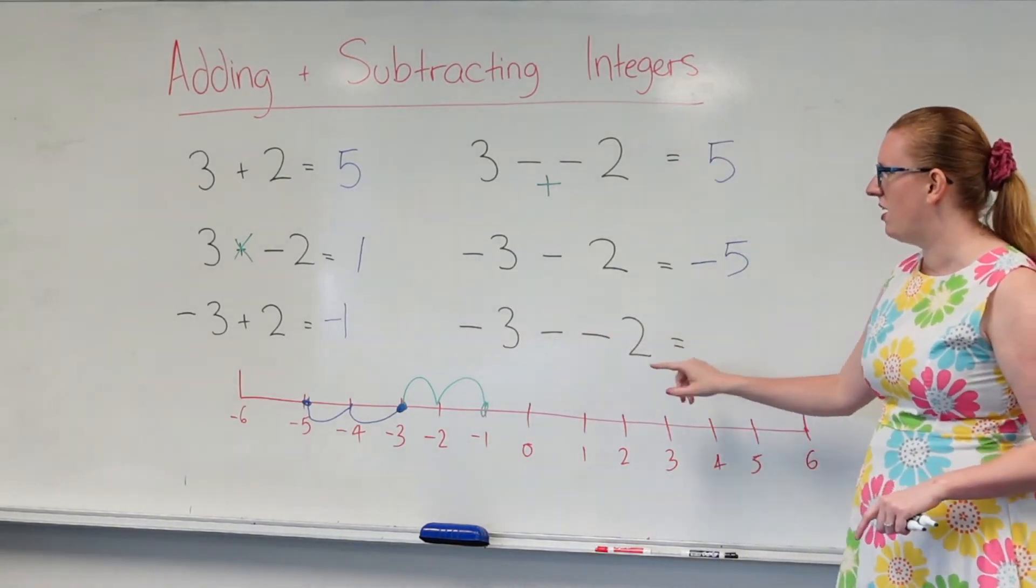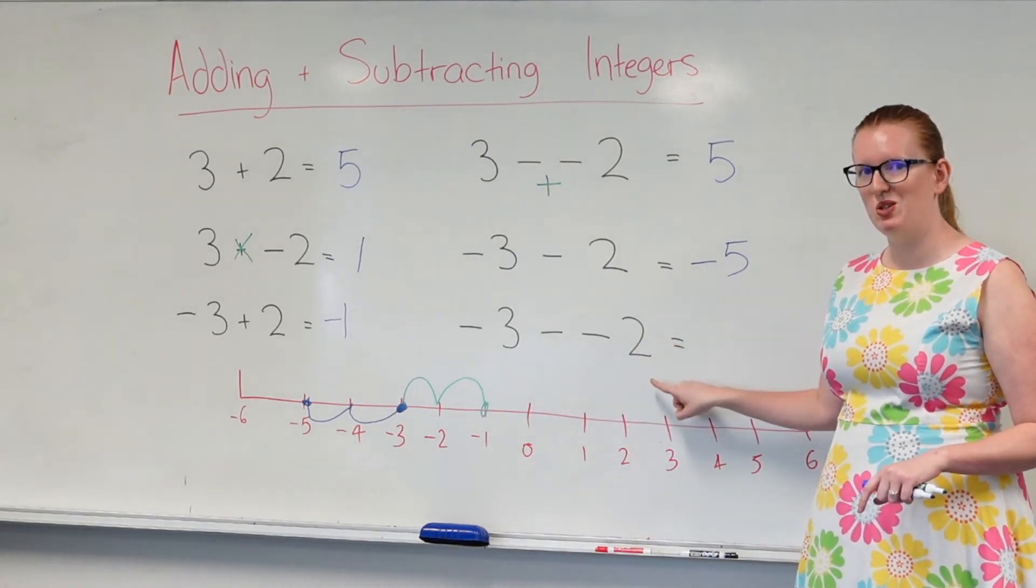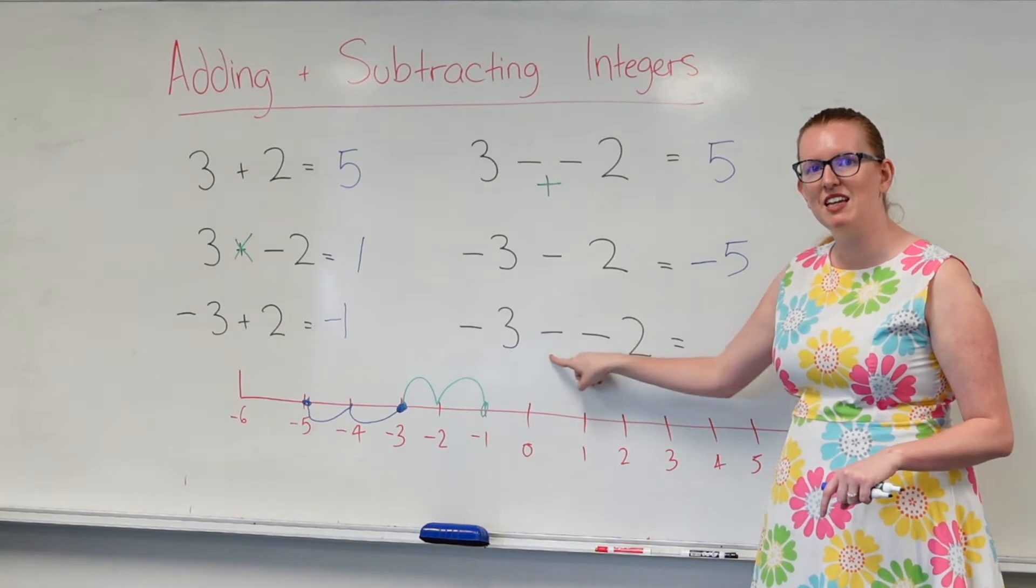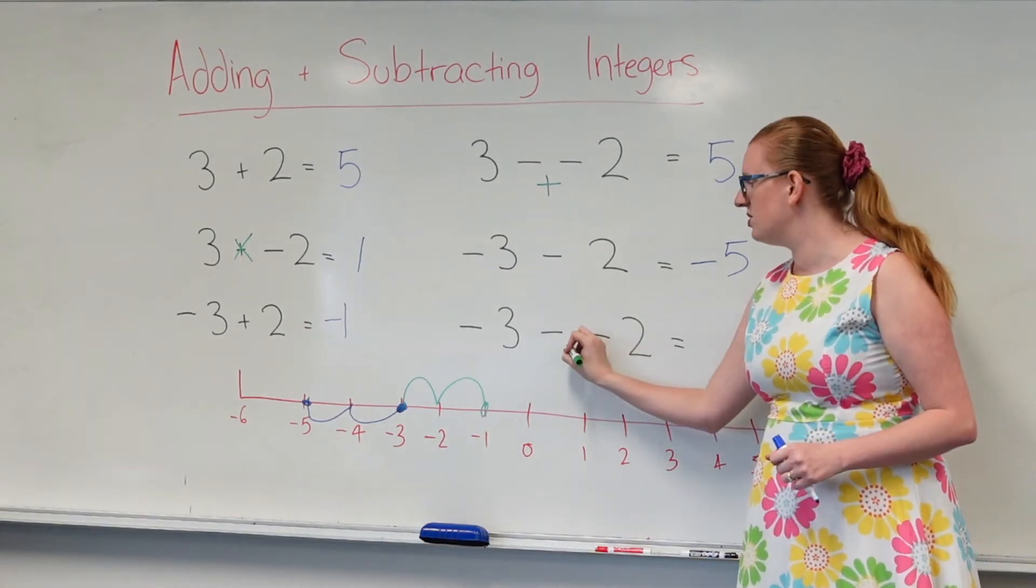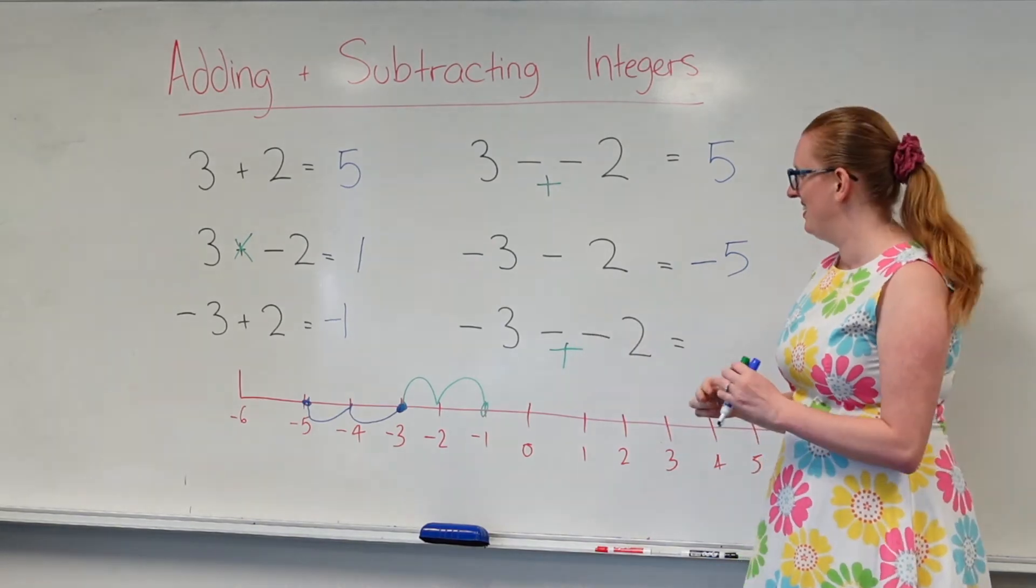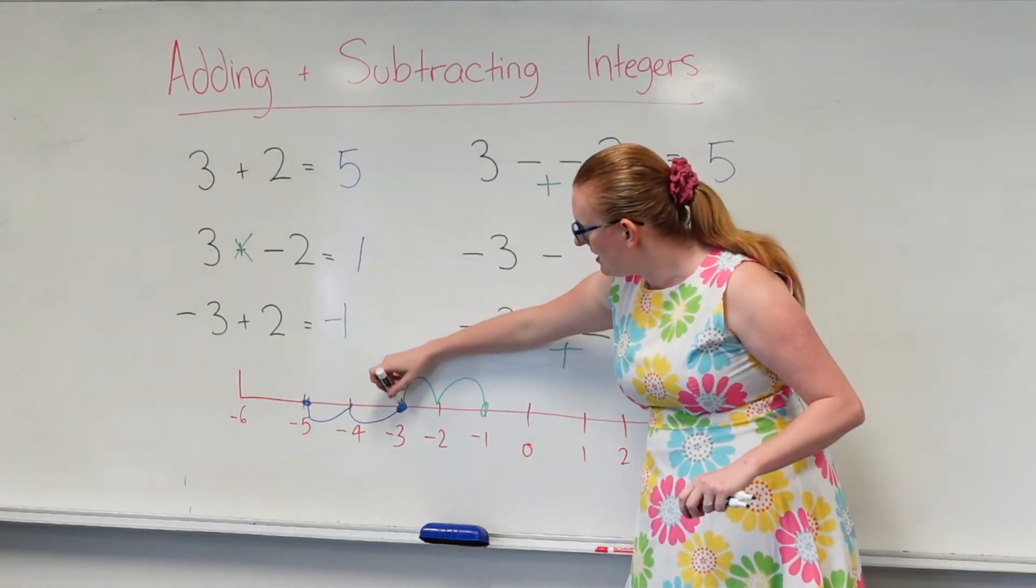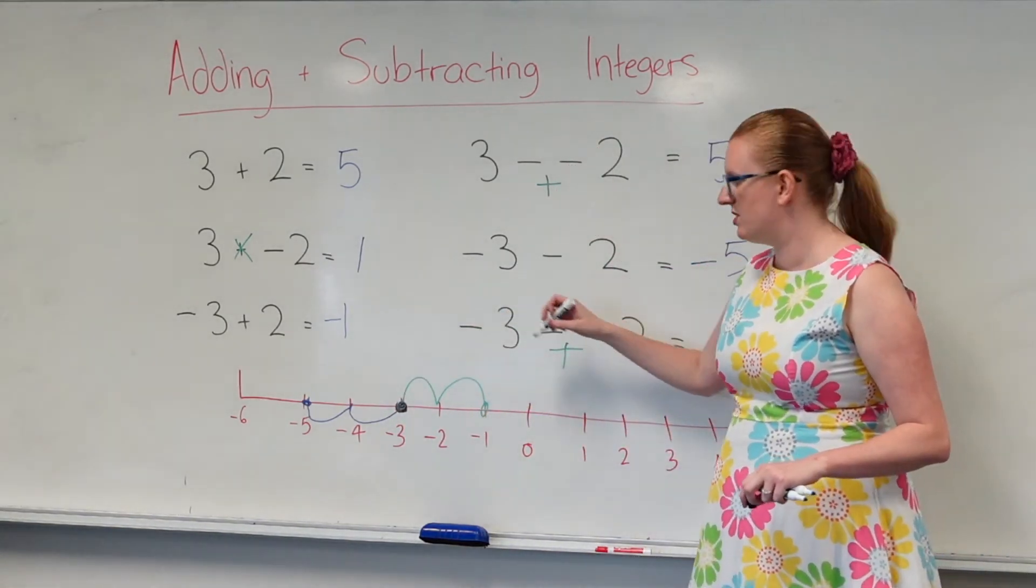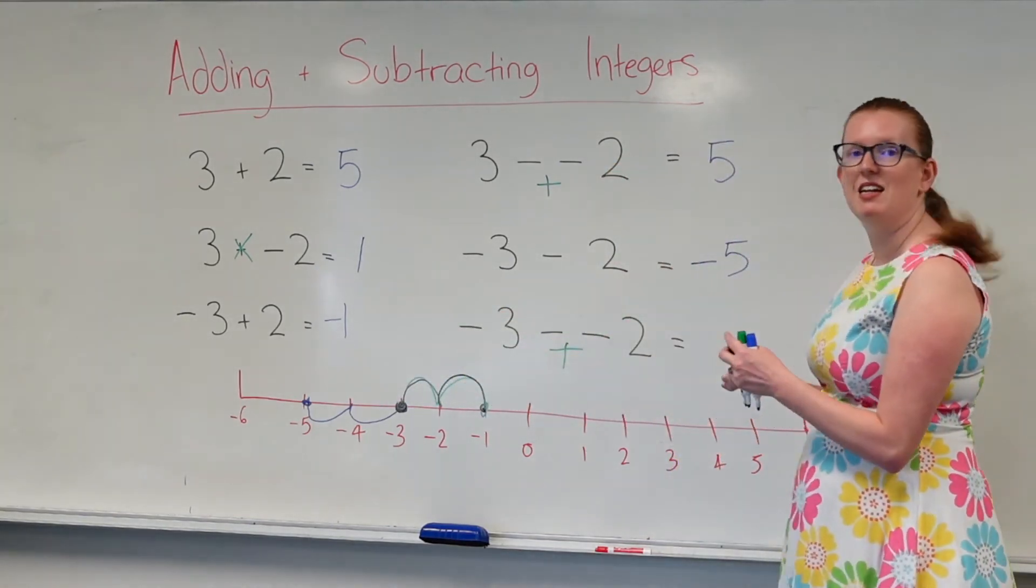Whereas here, I've got negative 3 minus minus 2. So, again, I've got two negatives, two minuses stuck up against each other. So, they're going to turn into a plus. Now, I'm starting at negative 3, and I'm plussing 2. So, 1, 2, and the answer's negative 1.